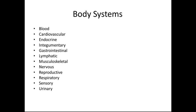The integumentary system comprises our skin, which helps in protection against foreign invaders and aids with temperature regulation. The gastrointestinal system helps us digest and absorb food into our bloodstream, and also helps us excrete waste.